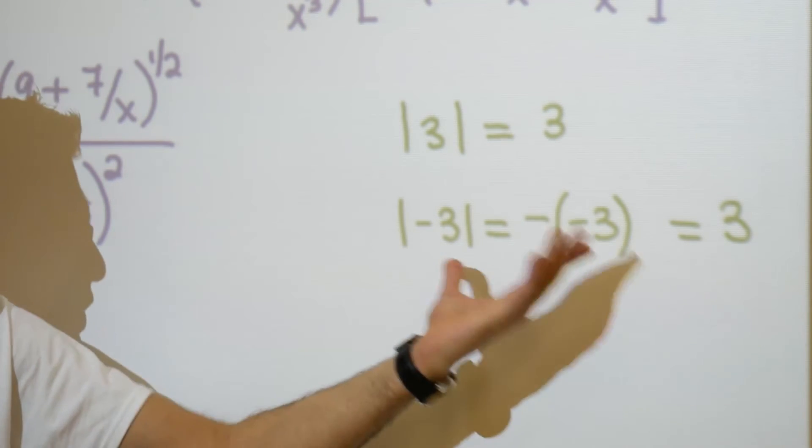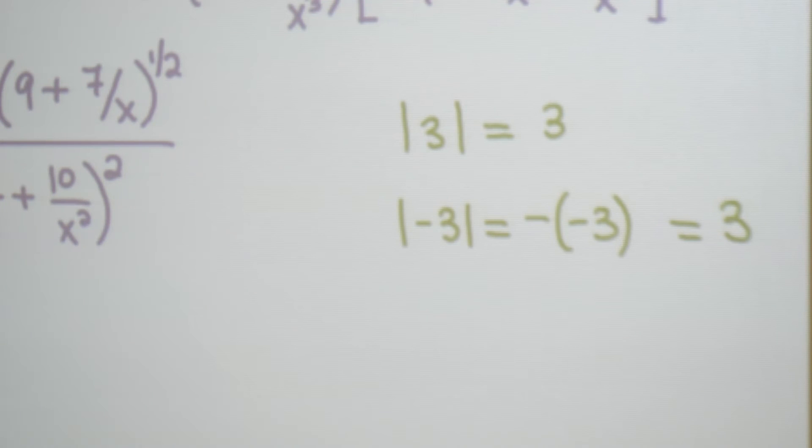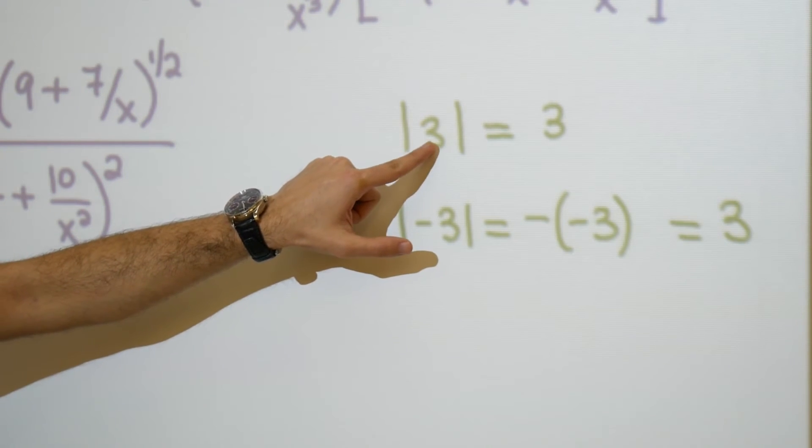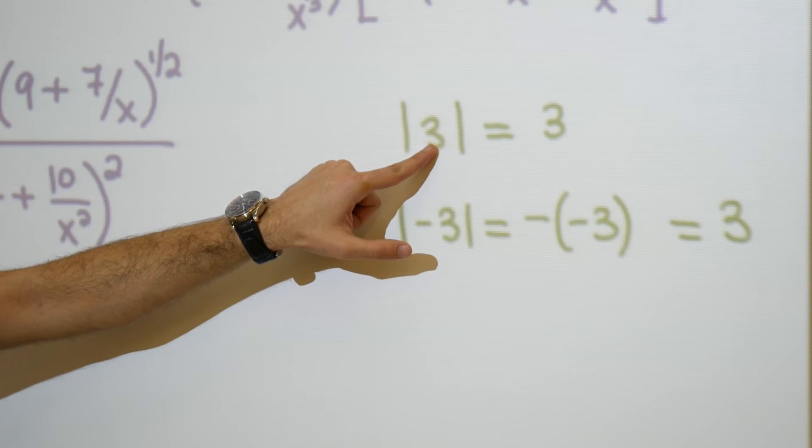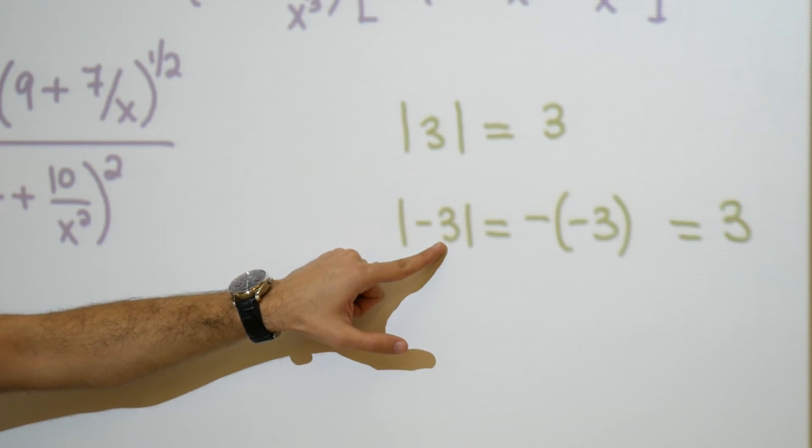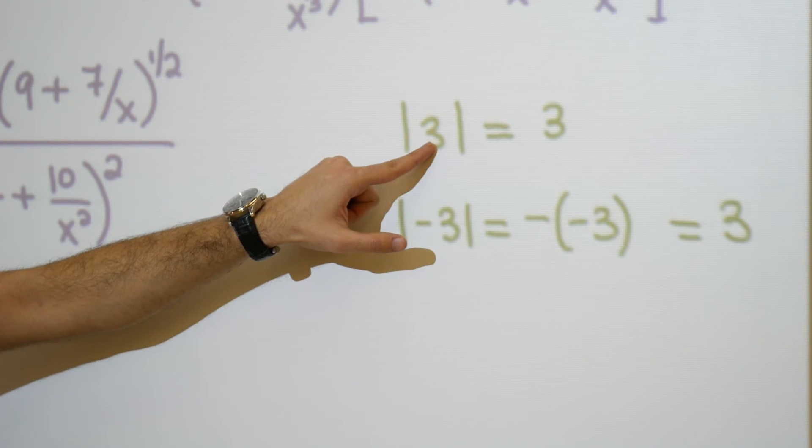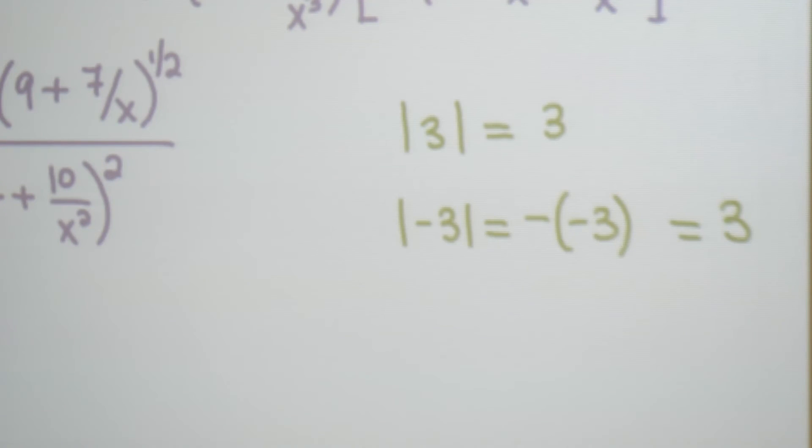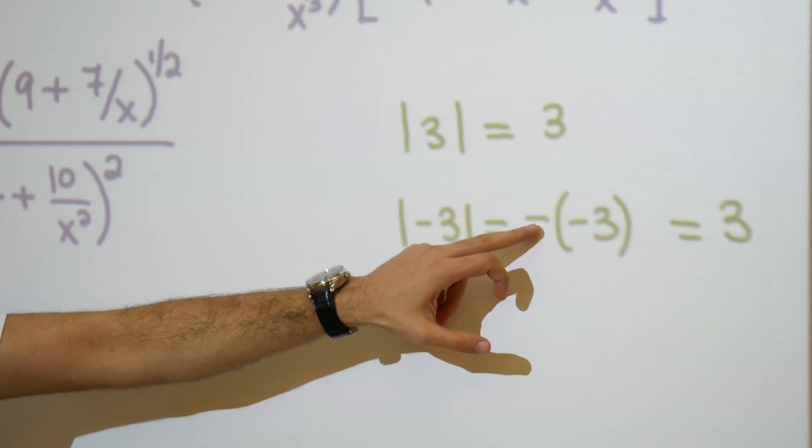So if instead of having absolute value, if I had a negative sign, notice I would get the exact same result. So this is good, but it requires that we know in advance whether what is contained within the absolute value parentheses is positive or negative. If we know in advance it's positive, we can simply remove those brackets.